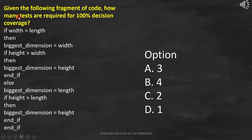Here, the question is: given the following fragment of code, how many tests are required for 100% decision coverage? This is the code which we need to analyze, and then we have to select the correct option from these options. Let's first analyze the code and parallelly draw the flowchart to get the answer.